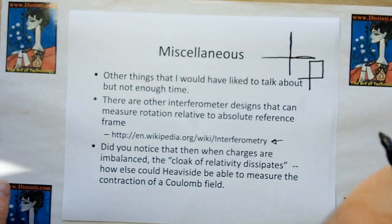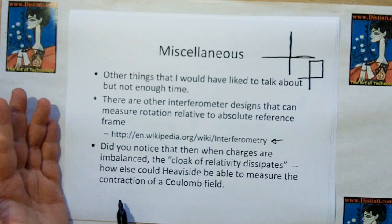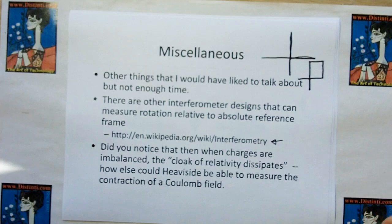Did you notice that when charges are imbalanced, the cloak of relativity dissipates? How else could Heaviside have been able to measure the contraction of the Coulomb field along its length? Because that system is out of balance — if it were balanced, you could not be able to measure it.